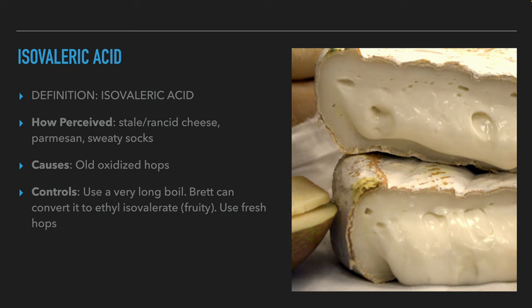Another aroma and flavor that can come from hops is isovaleric acid. This acid has an aroma of aged or spoiled cheese, parmesan cheese or sweaty socks. The cause of this aroma in beer is old and oxidized hops. To avoid this compound in the beer, the brewers should make sure that they use fresh hops. If they use old hops on purpose, such as in lambic, they should boil for a few hours to evaporate this compound from the wort. If it's already present, then the brewers can add yeast that can convert this material to ethyl isovalerate, which has a fruity aroma.